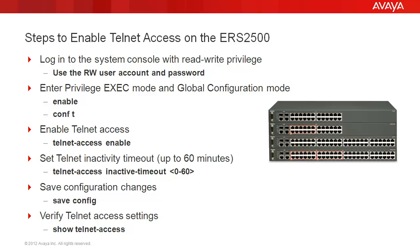As an option, you can set the Telnet inactivity timeout using the command telnet access inactive timeout, followed by the number of minutes, which can be an integer from 0 to 60. Then, we save the configuration changes with save config. Finally, we verify the Telnet access setting with show telnet access.